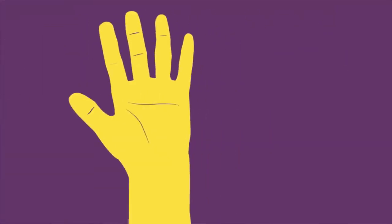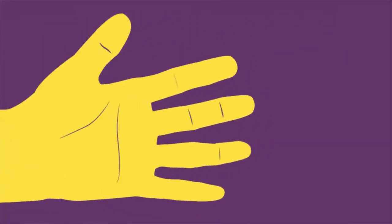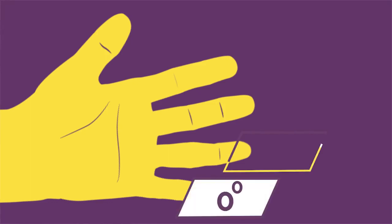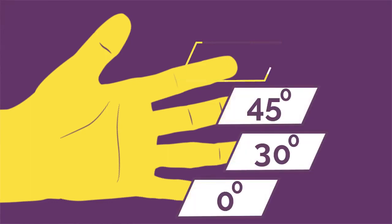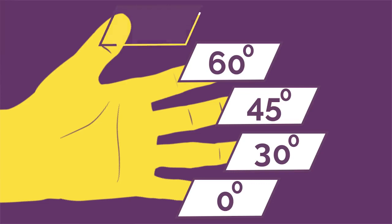Take either hand with your palm facing towards you and label your little finger as 0 degrees, your ring finger is 30, middle one is 45, 60 and your thumb is 90 degrees.